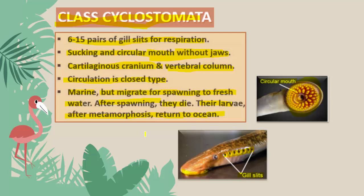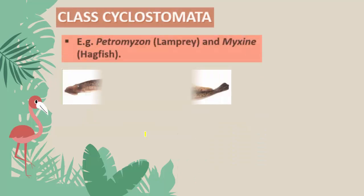To summarize the characters: gills are for respiration; a circular sucking mouth is present; they are without jaws; they are found as ectoparasites on many fishes; the cartilaginous cranium and vertebral column are present; circulation is of the closed type; all members inhabit marine or aquatic habitat but visit fresh water to lay eggs; and the body is elongated.